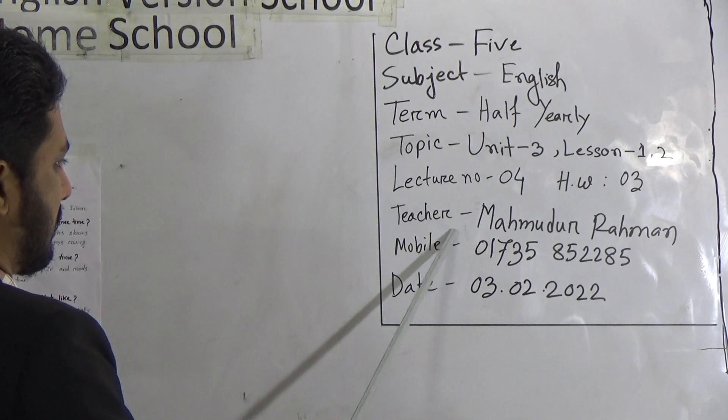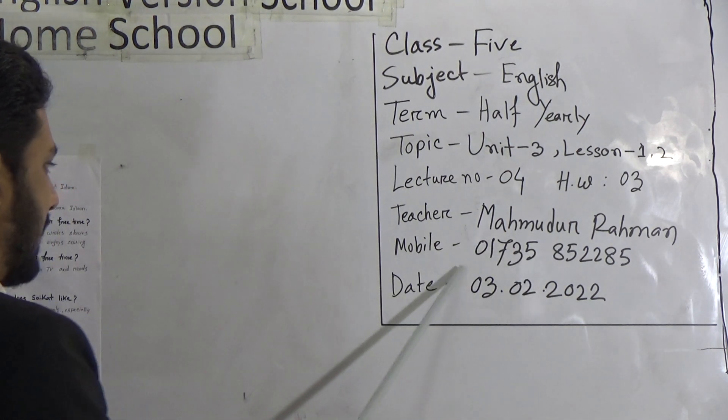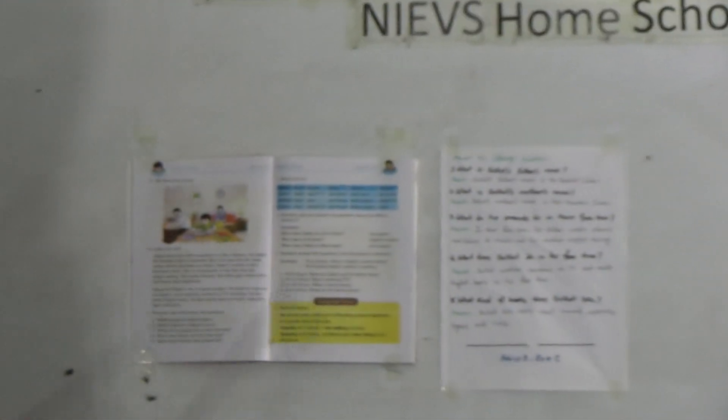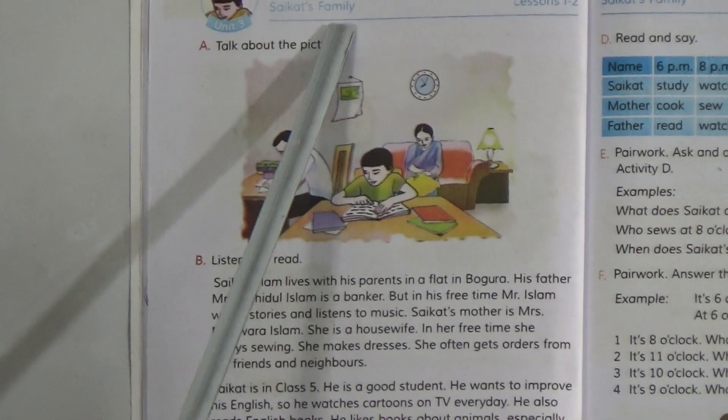This is your teacher Mohammed Raman and this is my phone number. There is a text in this unit. The title of this unit is 'Shaykhoth's Family.'